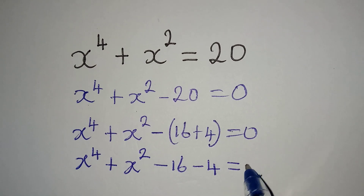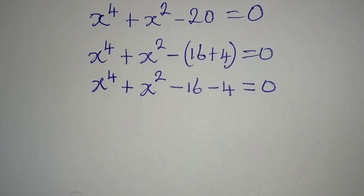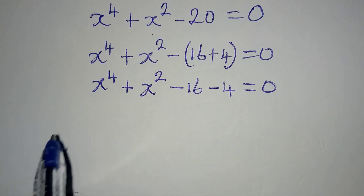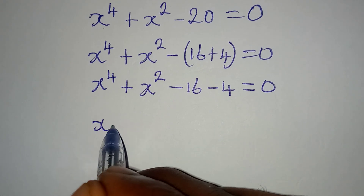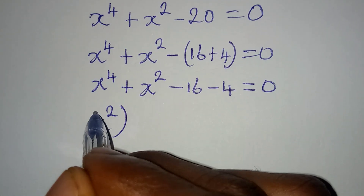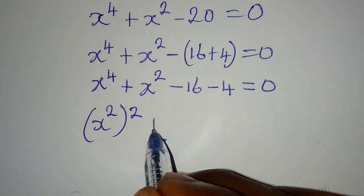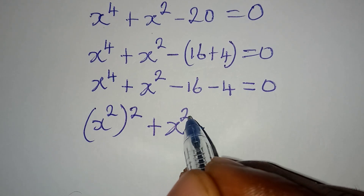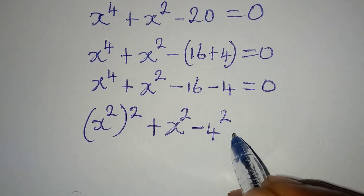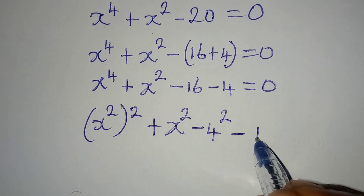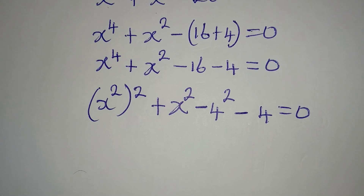So I have x to the power of 4 plus x to the power of 2 minus 16 minus 4, equal to 0. Now the next thing to be done is to break x to the power of 4 down and 16 down. So I will have x squared to the power of 2 — which gives us the same x to the power 4 — then plus x squared, minus 16, which is the same as 4 squared, then minus 4, equal to 0.